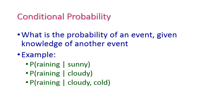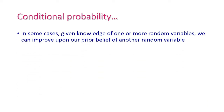Next we should compute the probability of an event based on given knowledge of another event. For example, P(raining | sunny) is the probability of raining if the weather is sunny. P(raining | cloudy) is the probability of raining if the weather is cloudy. And P(raining | cloudy, cold) is the probability of raining if the weather is cloudy and cold. In some cases, given knowledge of one or more random variables, we can improve upon our prior belief of another random variable.